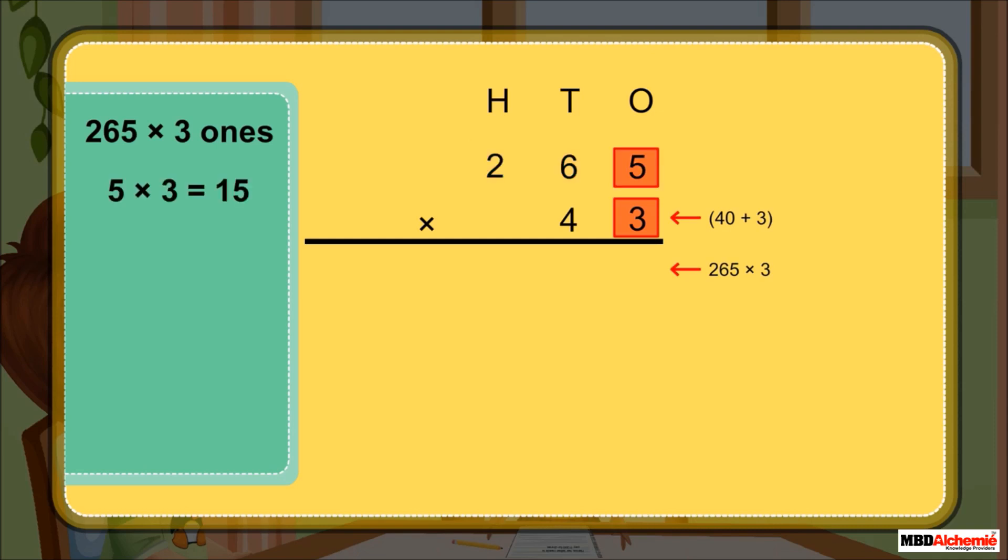265 times 3. 5 times 3 is 15. Write 5 and carry over 1. 6 times 3 is 18, and 18 plus 1 carry over is 19. Write 9 and carry over 1. 2 times 3 is 6, and 6 plus 1 carry over is 7. Write 7. Thus, 265 times 3 is 795.